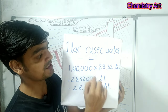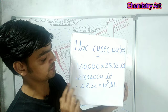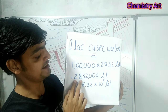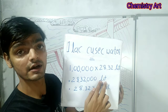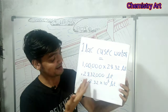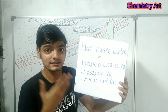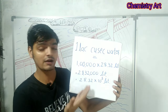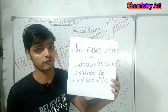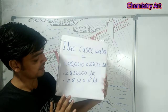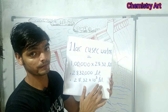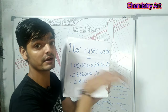One cusack is 28.32 liters, so one lakh cusack means 28.32 multiplied by one lakh — that is 28 lakh 32,000 liters of water per second! Just imagine that amount — 28.32 into 10 to the power 5 liters per second flowing from the dam.